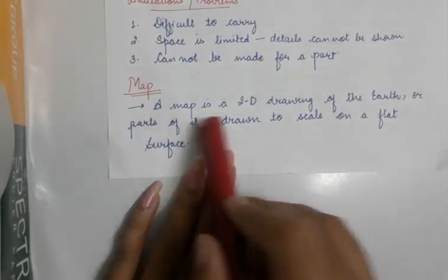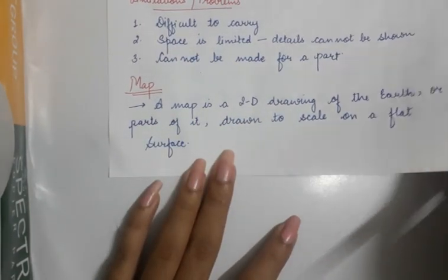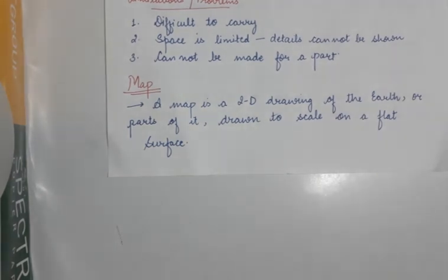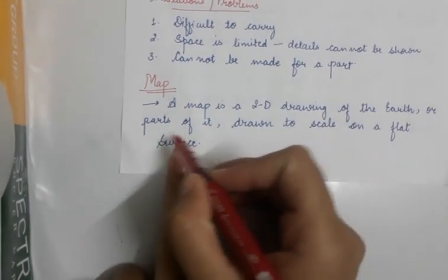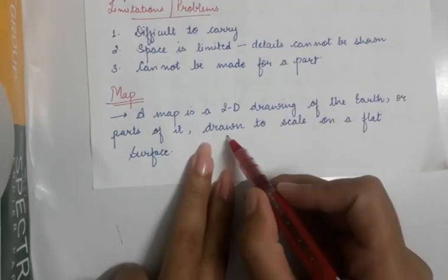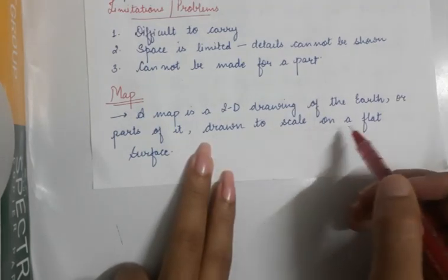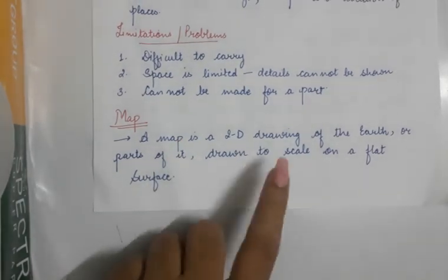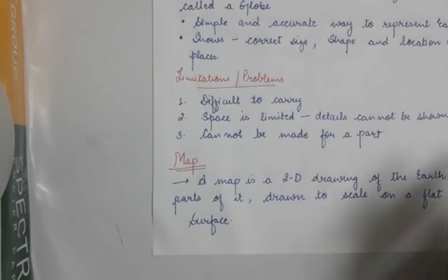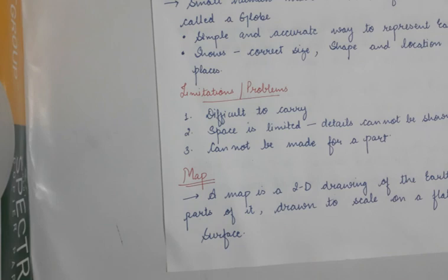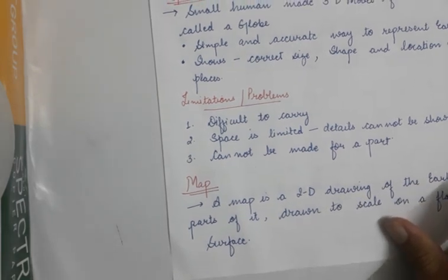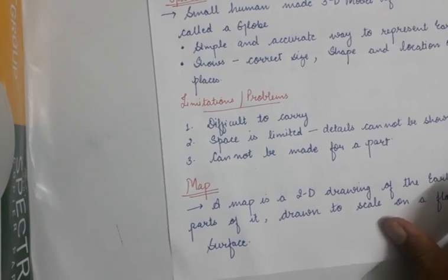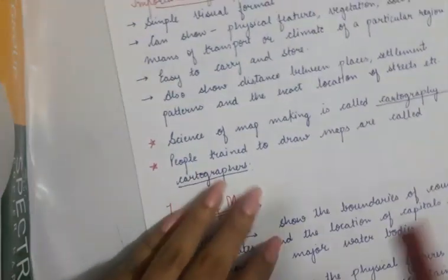Now, what is a map? A map is a 2D drawing. It can be drawn for parts of the Earth as well. Moreover, it is drawn to scale on a flat surface like paper, which means it has certain measurements. Like if I say 1 cm on the map, it means it is equal to a certain distance on the ground.